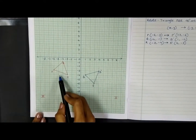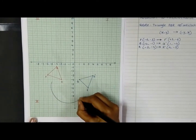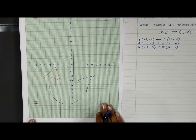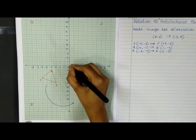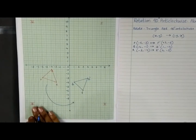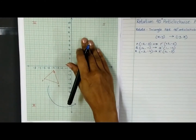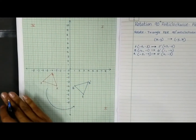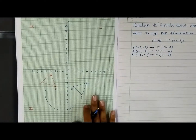You can observe that the original triangle was in quadrant 3. Moving anti-clockwise — opposite to the direction of a clock — it moves from quadrant 3 to quadrant 4. As a general rule: when rotating any figure 90 degrees anti-clockwise about the origin, an object in the third quadrant moves to the fourth quadrant, an object in the second quadrant moves to the first quadrant, and so on.